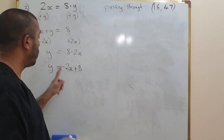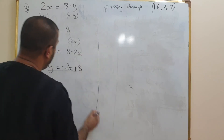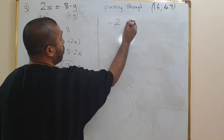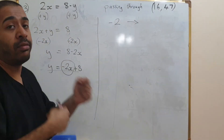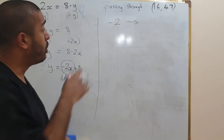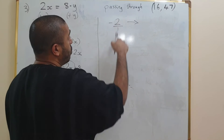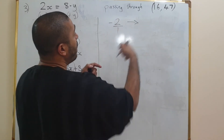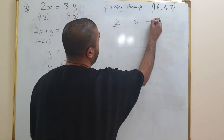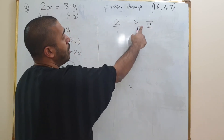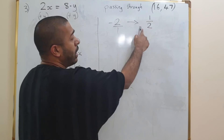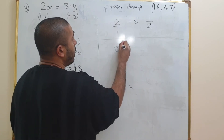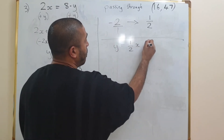Now we need to find the line which is perpendicular to this line. We work with the gradient of negative 2. To find the negative reciprocal, write it as a fraction: negative 2 over 1. Flipping it gives 1 over 2. The first one is negative, so this one stays as positive. So our gradient for the perpendicular line is one half, meaning the equation is y equals one half x plus c.